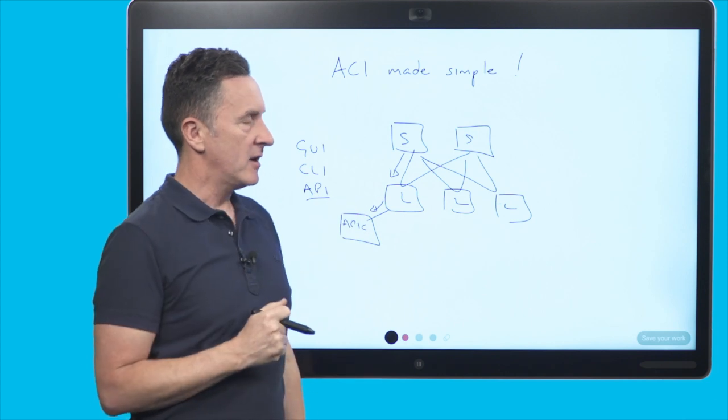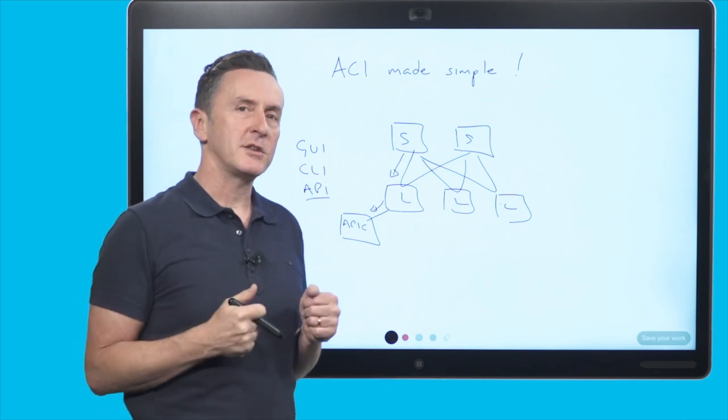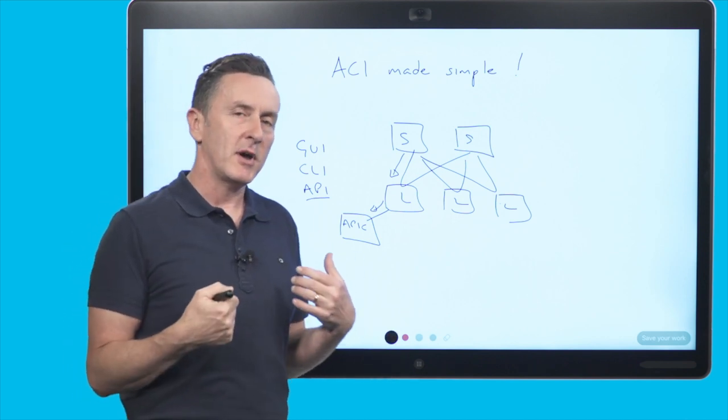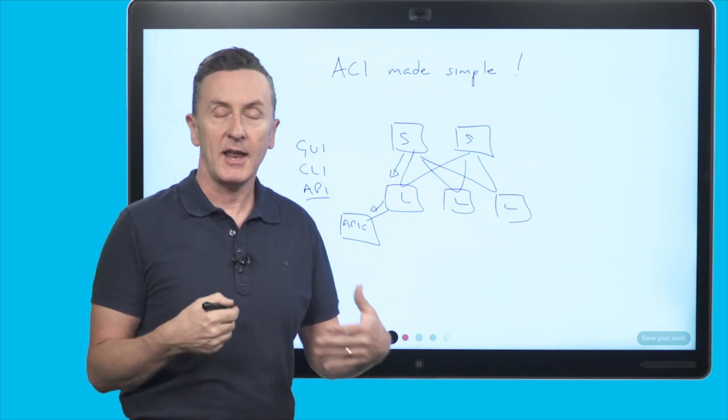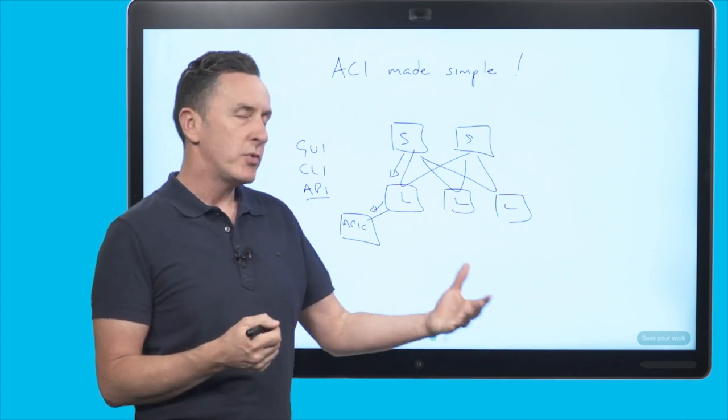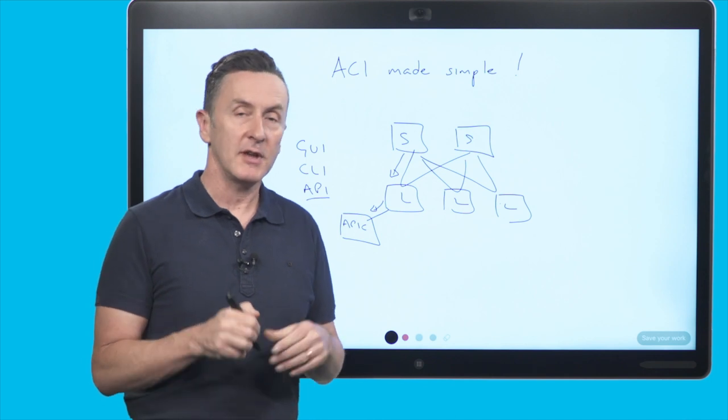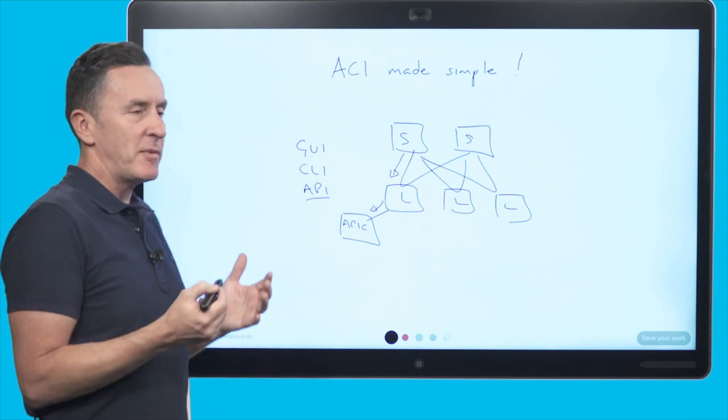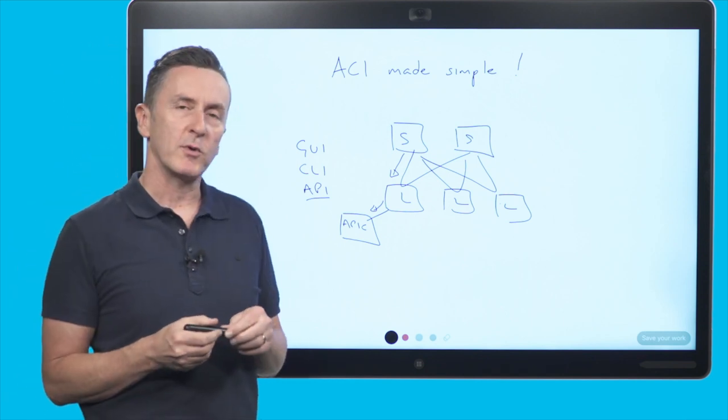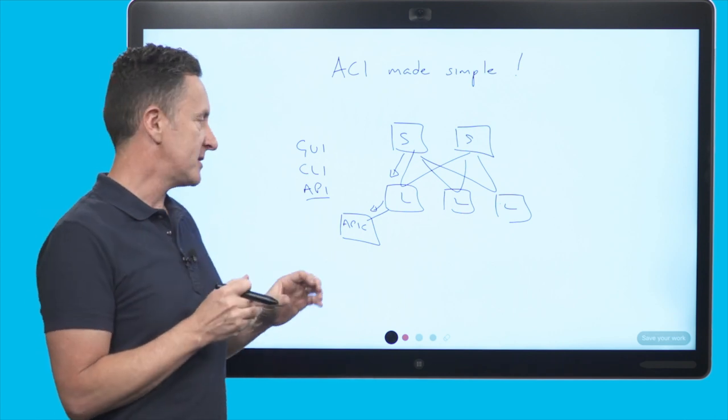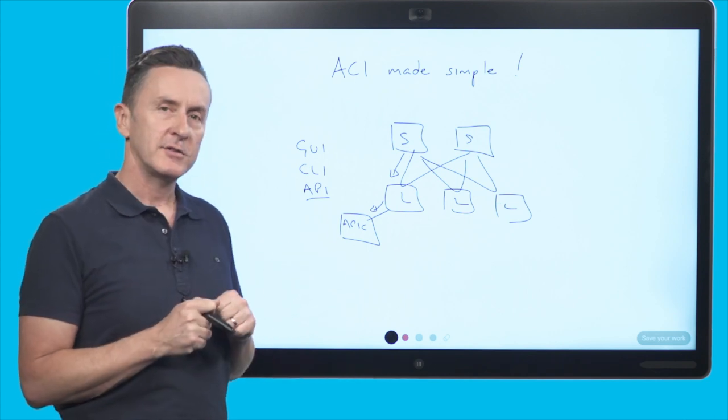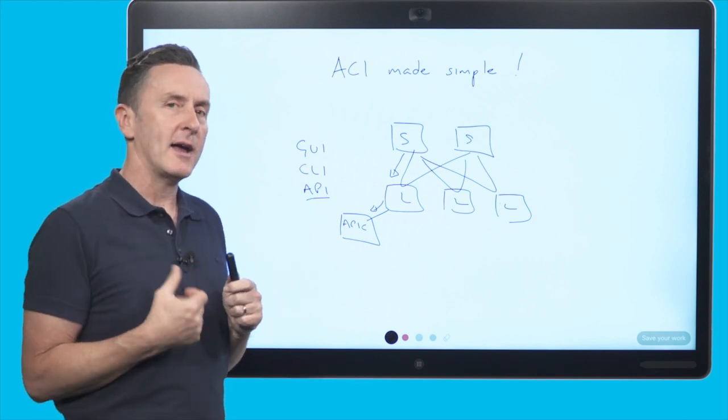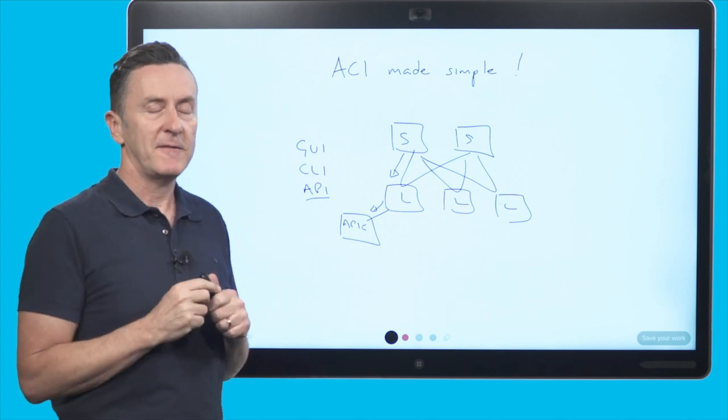But the key benefit for a customer is now that I've got one place to go to pull out all of this information from the network. Well if I construct my network configuration based on an application name for example I can actually pull back the network configuration for that application directly from the network itself. That's a key benefit and one of the accounts that I work with, one of the financials, they wrote a small script that queries the APIC API so that their help desk can use it and whenever a fault is raised they can actually pull back the networking config for that specific application.